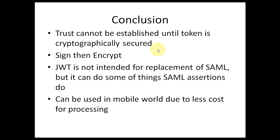In conclusion, JWT is just encoded and decoded — we can't establish trust until the token is cryptographically signed and secured. If sent over HTTPS, signing is more than enough; but if sent over a non-secured channel, you should sign and then encrypt the token. JWT is not intended as a replacement for SAML, but it can do some of what SAML assertions can do. Due to its compact size and low processing cost, it is well-suited for mobile. That's it for the JWT introduction — the next video will cover JSON Web Signature. Thank you.